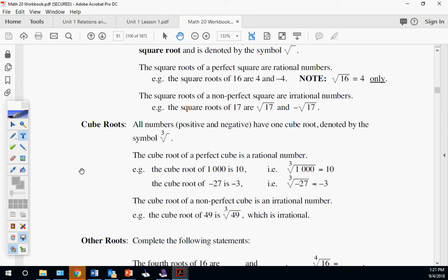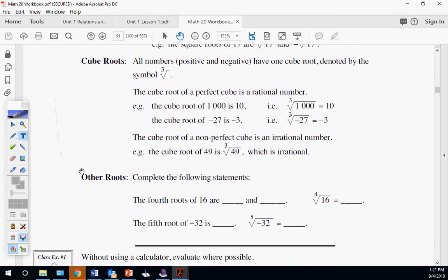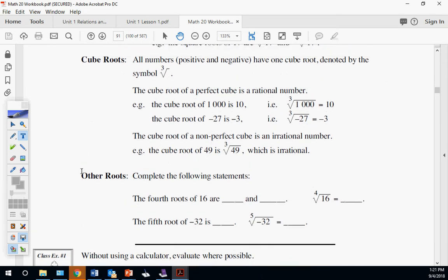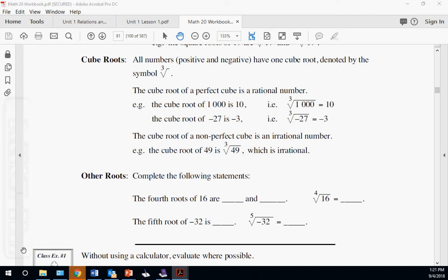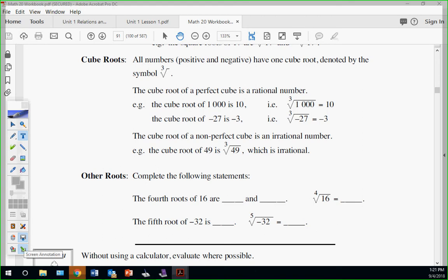Remember these non-perfects like root 17 can't be broken down at all, so root 17 is just the exact value. For cubes, any odd negatives are okay because if you do negative 3 three times, negative 3 times negative 3 is 9, times negative 3 is back to negative 27. That's the pattern of cubes and why you're going to have a negative.